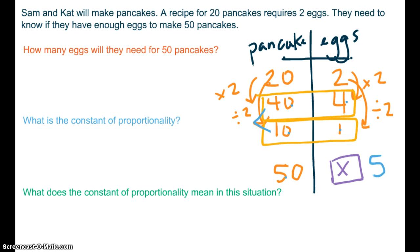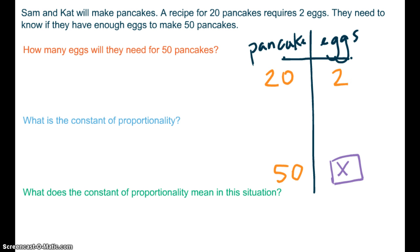Alright, if you didn't understand that, pause, rewind, and watch it again. It'll make sense. But now I'm going to show you another way. So remember I told you that you can look at a vertical relationship in your ratio table, but you can also look at a horizontal relationship.